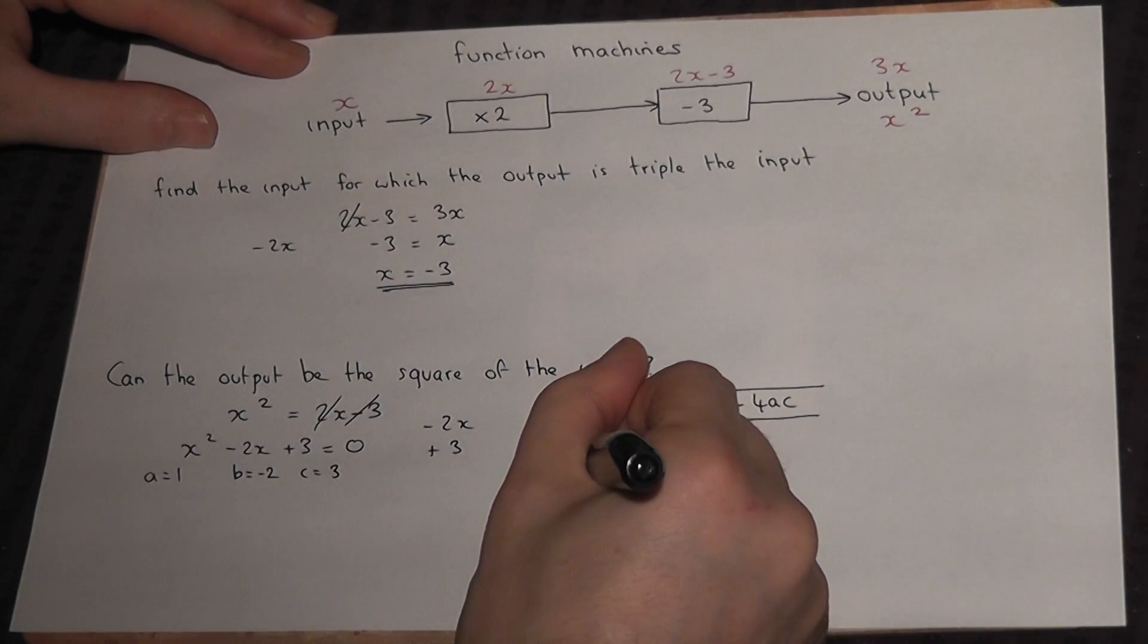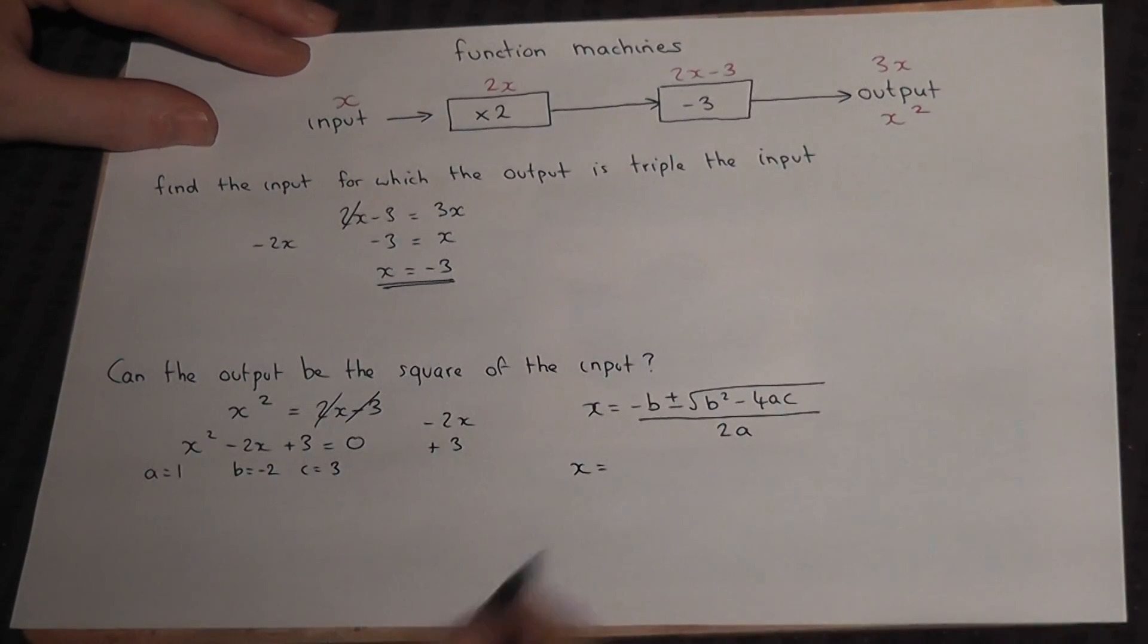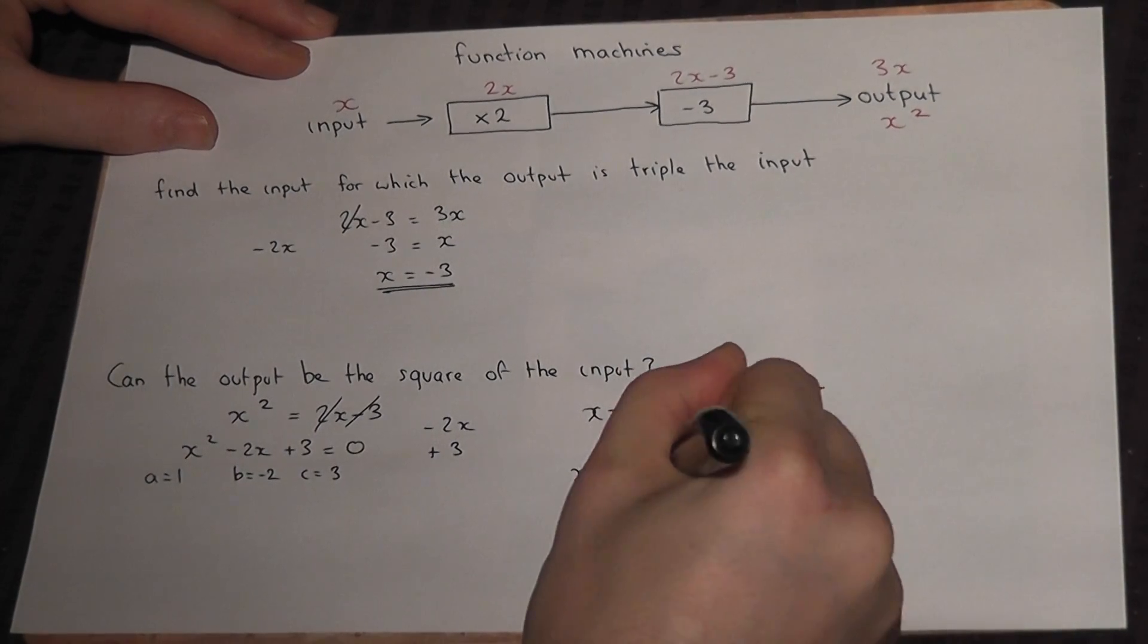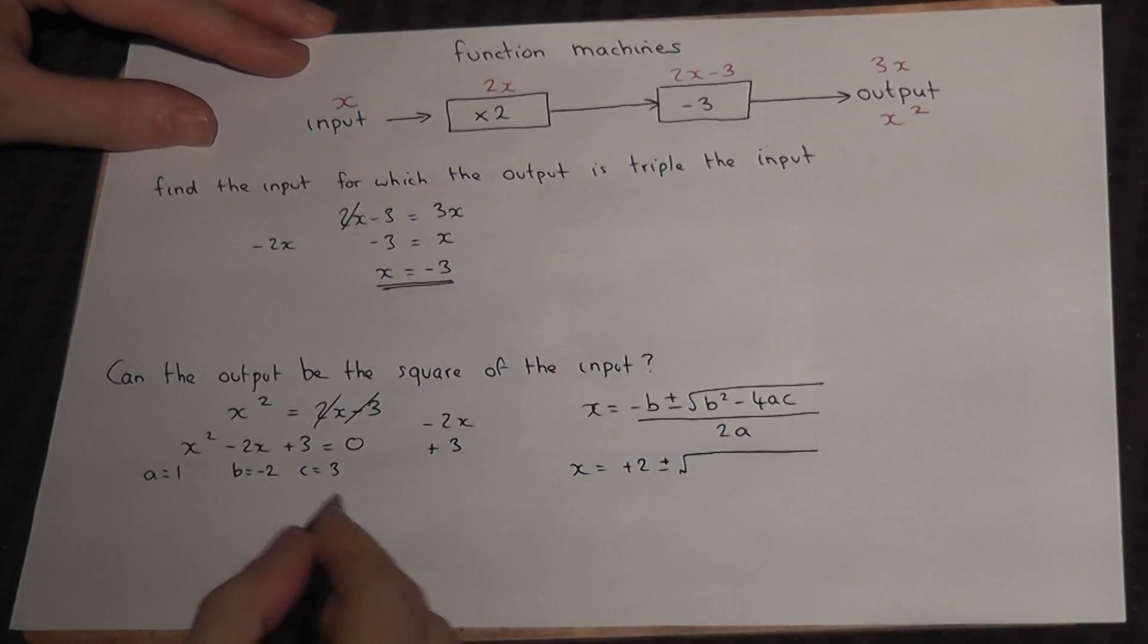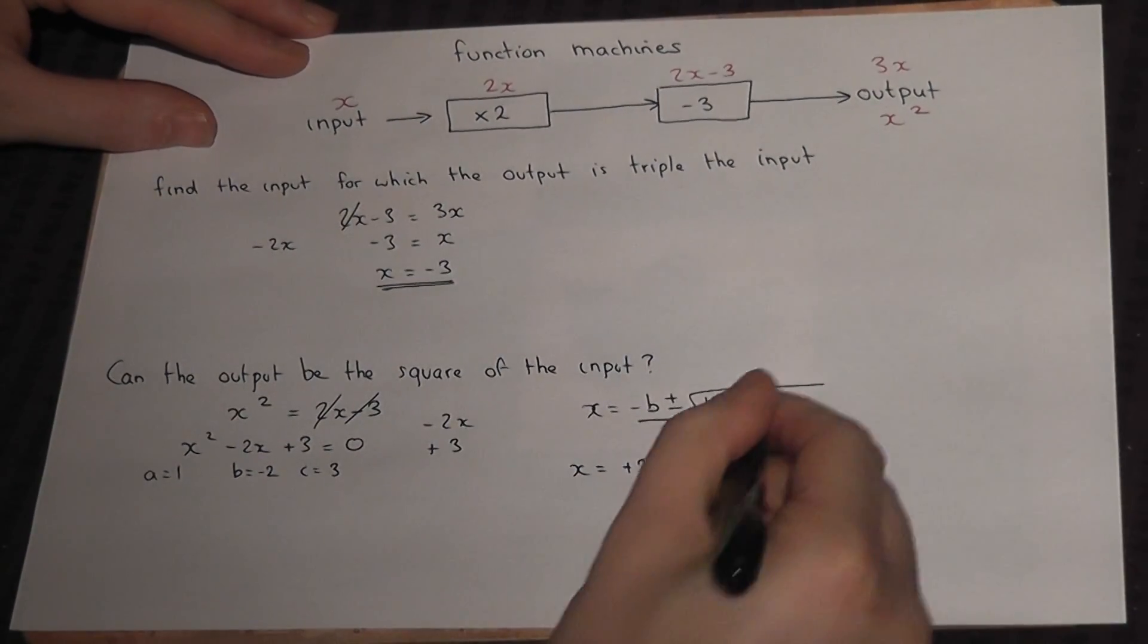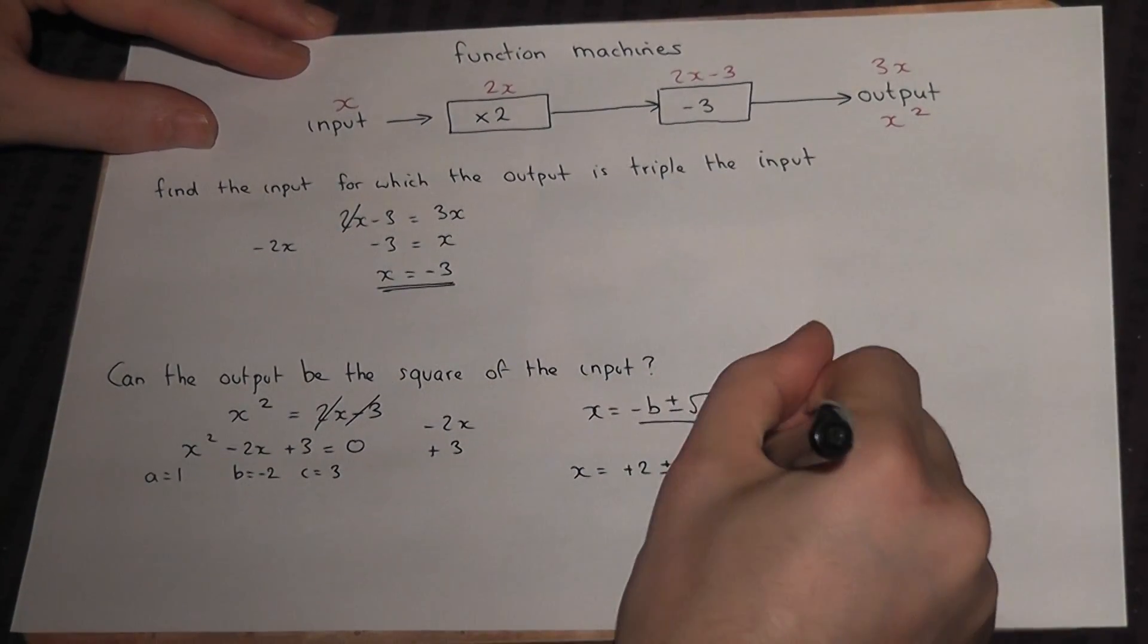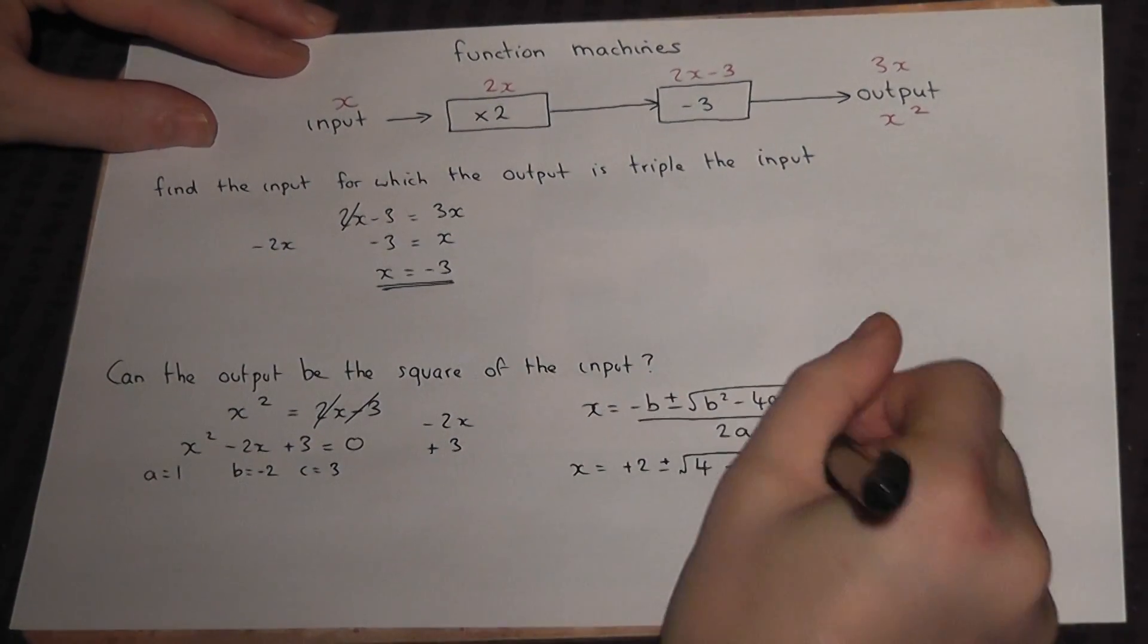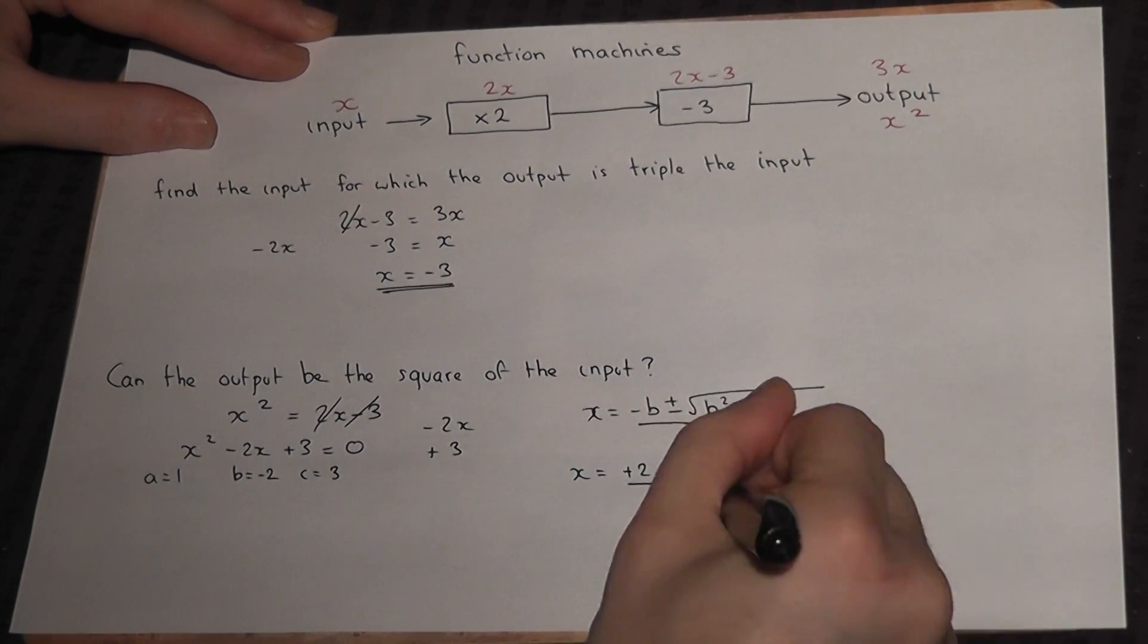So x equals minus b, which becomes plus 2, plus or minus. Now minus 2 squared becomes plus 4. 4 take away 4 lots of ac, all divided by 2.